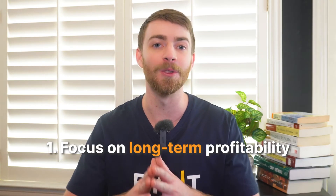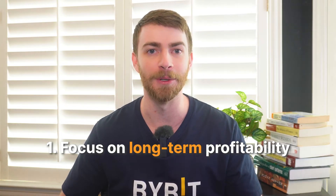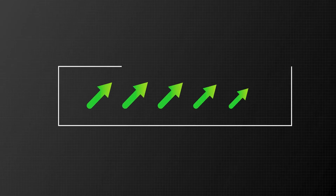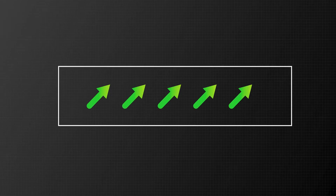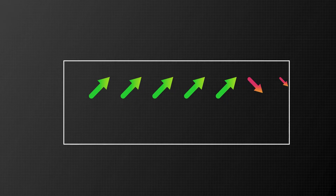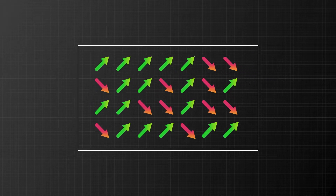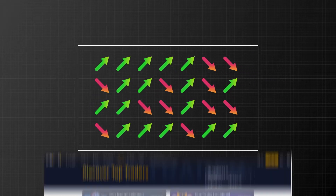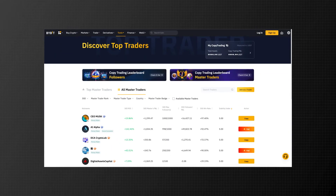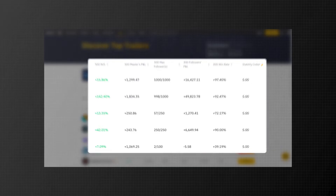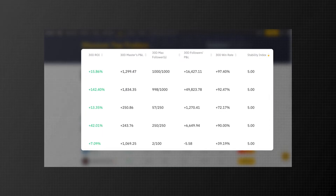Number one: focus on long-term profitability. Hot streaks are very common in trading, as it's much more difficult to be profitable in the long term than over a period of a few days. Use the 30-day and 90-day ROI stats to determine which master traders maintain a consistently profitable account.